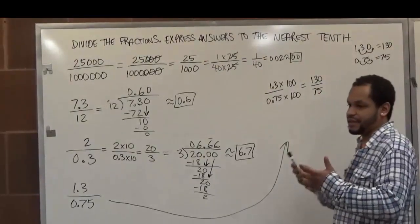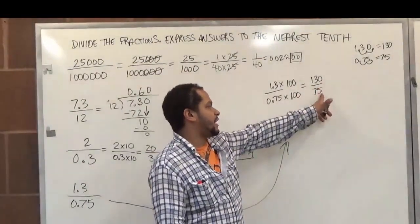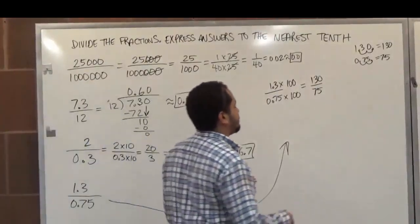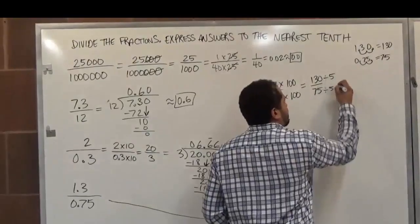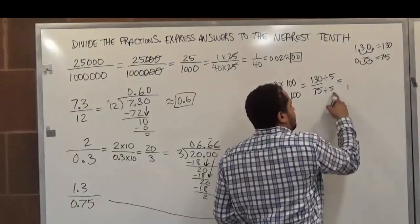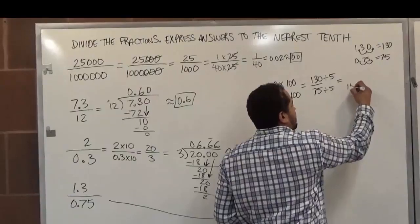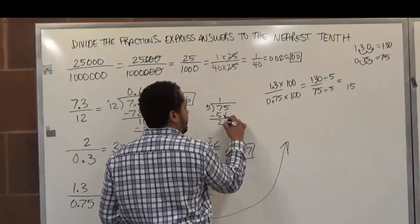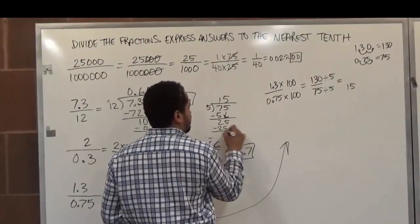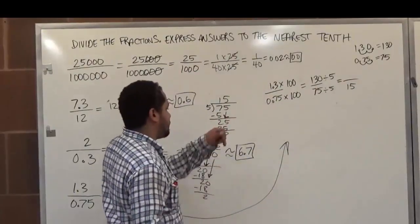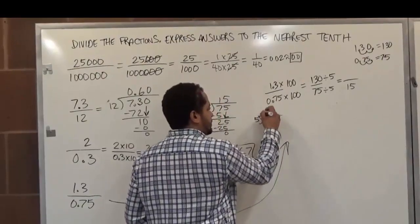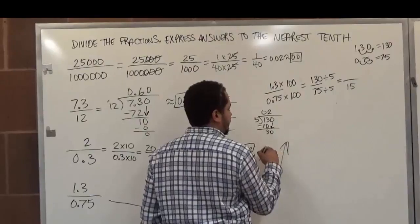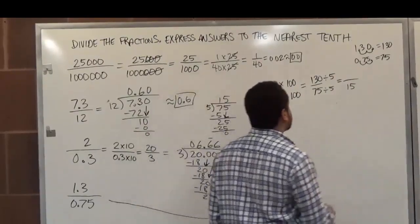So here we have one hundred thirty divided by seventy-five. Can we reduce the fraction? Yes — both numbers end with zero and five, which means they are multiples of five. Five goes into seventy-five fifteen times: five into seven once gives five, subtract to get two, bring down the five, five into twenty-five five times, giving us fifteen. For one hundred thirty divided by five: five goes into one zero times; five goes into thirteen twice, that's ten, subtract to get three; bring down the zero to get thirty; five goes into thirty six times exactly. So our reduced fraction is twenty-six over fifteen.